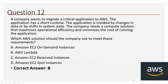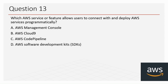AWS Lambda is a serverless compute service provided by AWS. You don't need to maintain the infrastructure — you just manage your application. It supports programming languages such as Node.js, Python, Ruby, Java, Go, and .NET. You deploy your code to Lambda and run it whenever you want; infrastructure is maintained by AWS. You only get charged for the time your code actually runs.